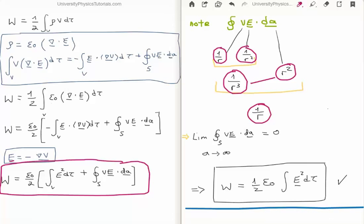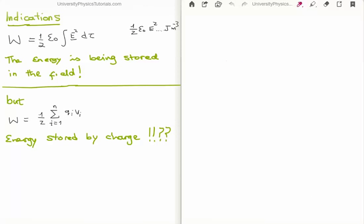So where do we go from here? Well, I promised in the previous video that we would be able to see where the electric energy is being stored. So we've written the work done to assemble a grouping of charges is one half epsilon zero, the integral of e squared d tau.